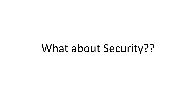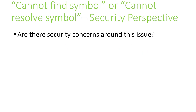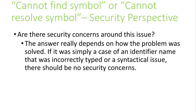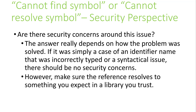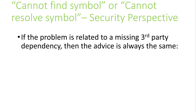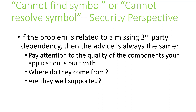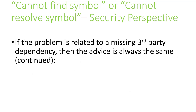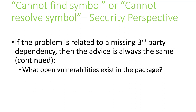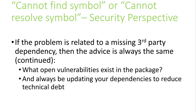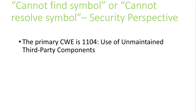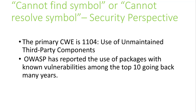Let's switch gears and consider the cannot-find-symbol error from an application security perspective. Are there security concerns around this issue? The answer really depends on how the problem is solved. If it's simply a case of an identifier that was incorrectly spelled or some other incorrectly typed name, there should be no security issues. However, should the solution involve resolution to a third-party library, make sure you're using a library that you expect and trust. Pay attention to the quality of libraries you're using — do you know where they come from, are they well-supported, are there regular updates, are you on the latest version, and do you know what open vulnerabilities exist? You should always be updating your libraries to avoid increasing your technical debt. The primary CWE related to these concerns is CWE-1104, use of unmaintained third-party components. OWASP has reported the use of packages with known vulnerabilities among the top 10 for many years.